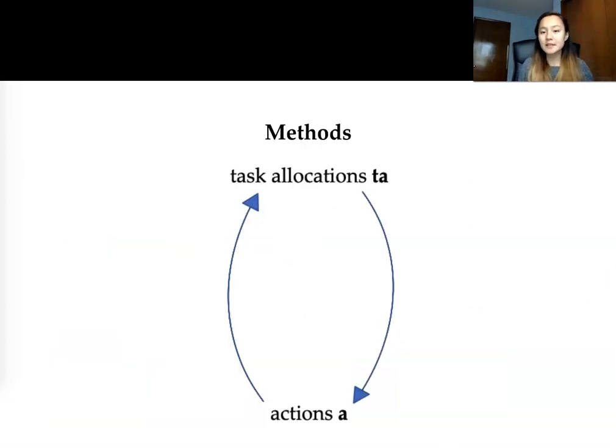Onto our methods. So our methods can be understood in two basic modules. One is a module that determines what our task allocation should be. You can interpret this as what should I do and what should you do. The second module handles actions. So given our task allocations, what specific action should I take?